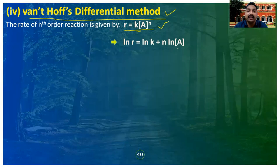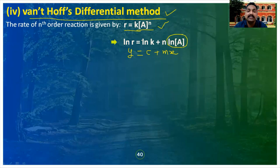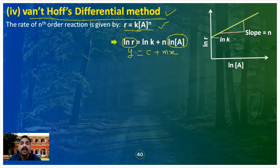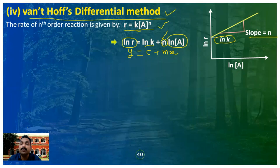This expression is in the form of y = c + mx. So if we plot ln[A] versus ln R, we get a straight-line plot. Here, the slope is equal to n, and the intercept value is equal to ln k. So by using this plot, we can determine the order of a reaction.